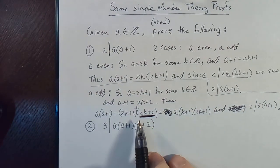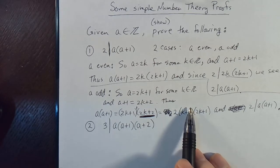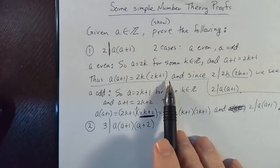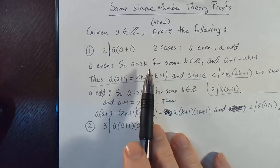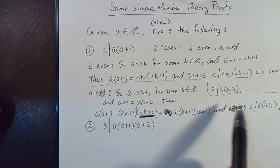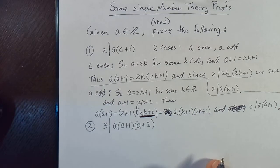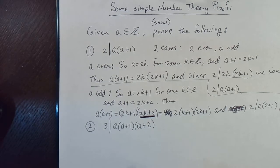So we broke that into two cases, and we proved that in either case — whether a is even or whether a is odd — two divides a times a plus one. And that's basically obvious, because if a is not even then a plus one is, and vice versa.